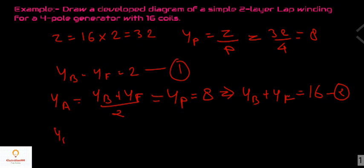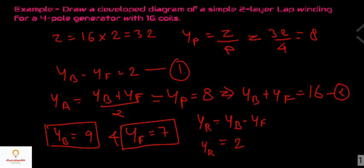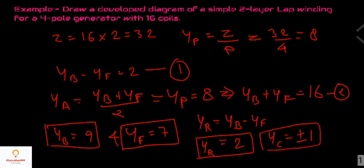From equations 1 and 2, we get back pitch equals 9 and front pitch equals 7. Also, for lap winding, resultant pitch Yr equals Yb minus Yf, which equals 9 minus 7, equals 2. So Yr equals 2 and commutator pitch equals plus or minus 1.